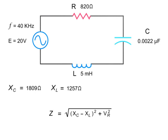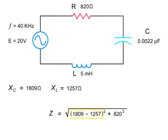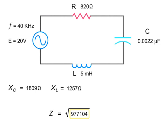To calculate the total impedance of the circuit, take the square root of the capacitive reactance minus the inductive reactance, squared, added to the resistance of the resistor squared. Thus, taking the square root of 1,809 ohms minus 1,257 ohms squared plus 820 ohms squared gives you 988 ohms.